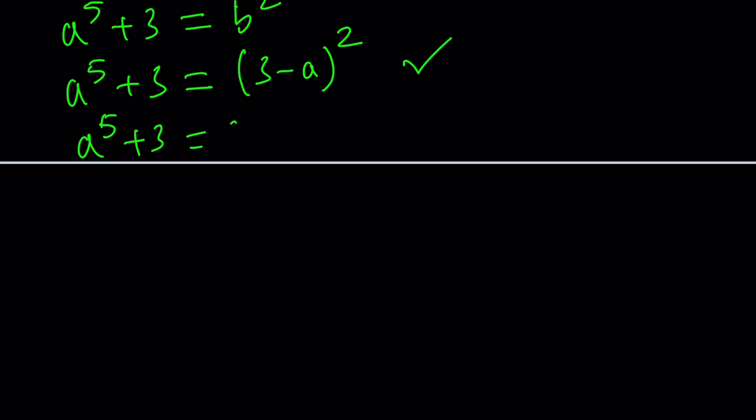So now, we're going to expand. A to the fifth plus 3, 9 plus A squared minus 6A. Let's put everything together. A to the fifth minus A squared plus 6A, 3 minus 9, it's a negative 6 equals 0, and this is the best part. We can guess and check. Obviously, A equals 1 is a solution, but guess what? This is factorable. Wow, such a huge difference.